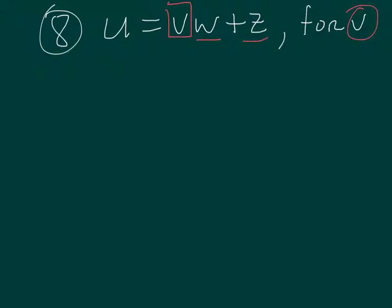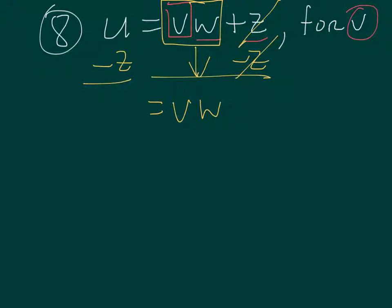We're gonna take this Z, because this right here is attached so we can't do anything with it. The way we move the Z is we're gonna subtract Z from both sides, because what you do to one side you do to the other. Once you have moved it from one side you eliminate it, you bring down what you have not touched. So this is VW equals, on the left hand side you got U minus Z.